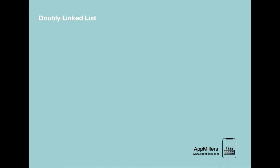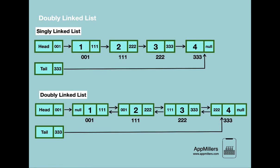Let's recap what's the difference between double linked list and single linked list. In the case of single linked list, each node references to the next node. As you can see from this sample, node 1 references to node 2, node 2 references to node 3, and node 3 references to node 4. But there is no way that any node can point back to the previous node.